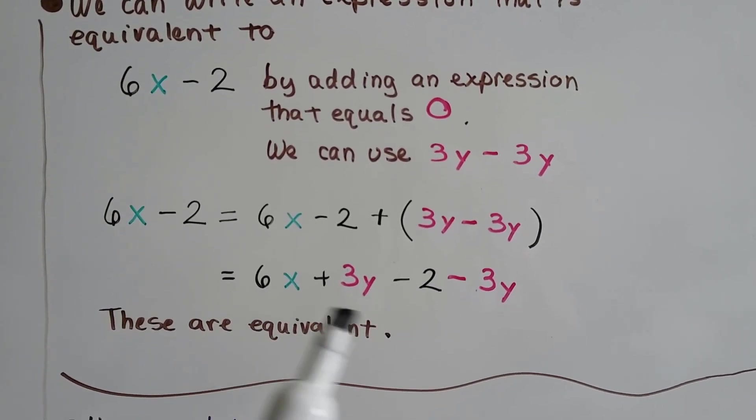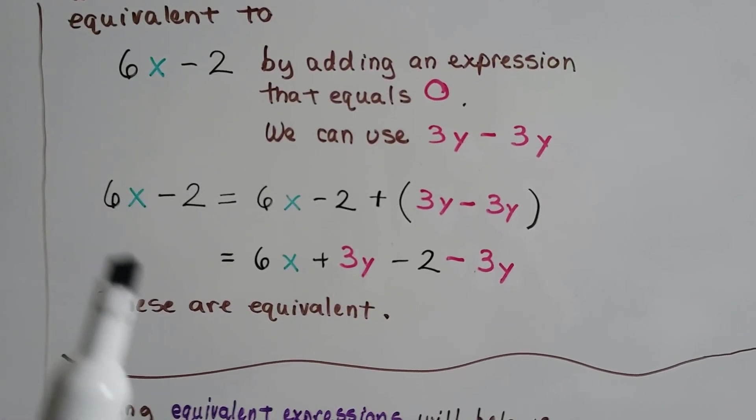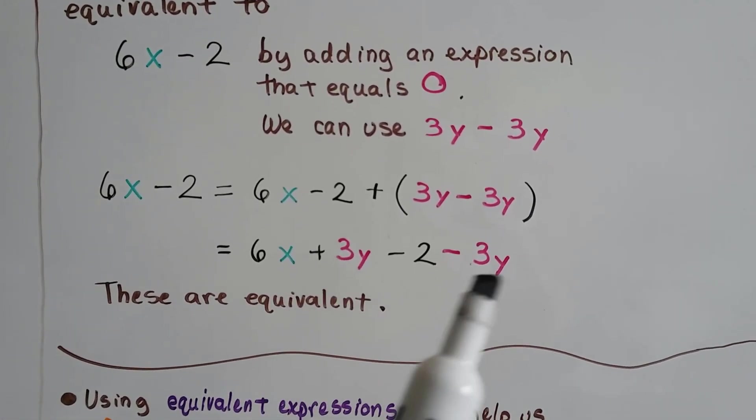We can rewrite it and rearrange it like this, and this is equivalent to this because these make a 0 pair together.